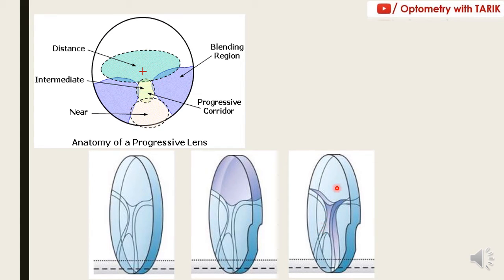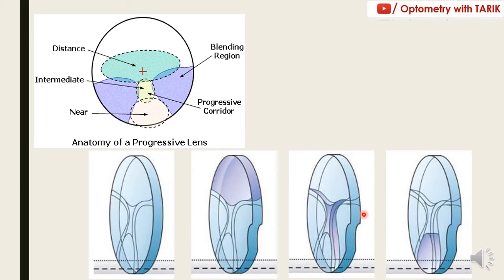If it is Plano for distance, there will be a continuous 0.25, 0.50, 0.75, and so on in the corridor until it reaches the near addition point. Finally, the third zone is the near reading zone, where there is the complete addition power. If your addition is 2.0, this complete area will have plus 2 as the power. These are the three regions in your progressive lenses.